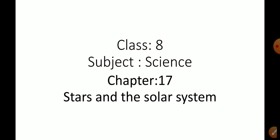In earlier classes we dealt with the planets present in the solar system. Those planets are Mercury, Venus, Mars, Earth, Jupiter, Saturn, Uranus, and Neptune. These are the planets present in the solar system.